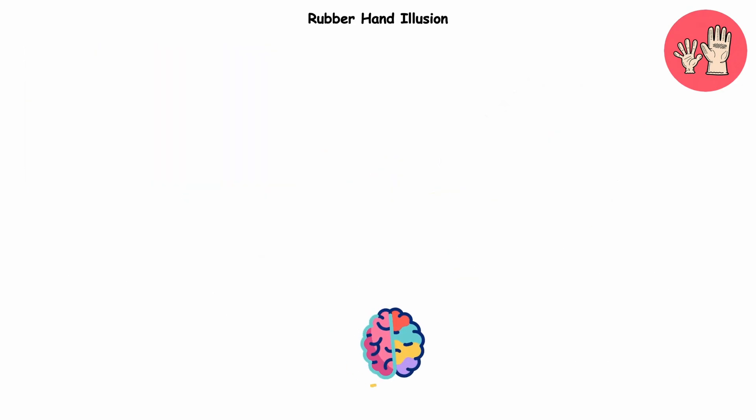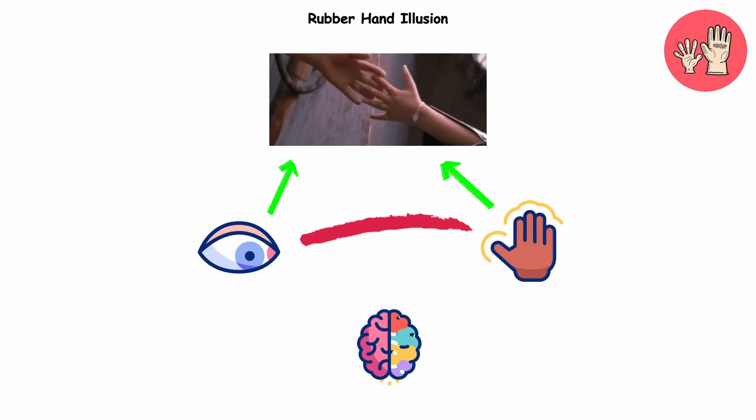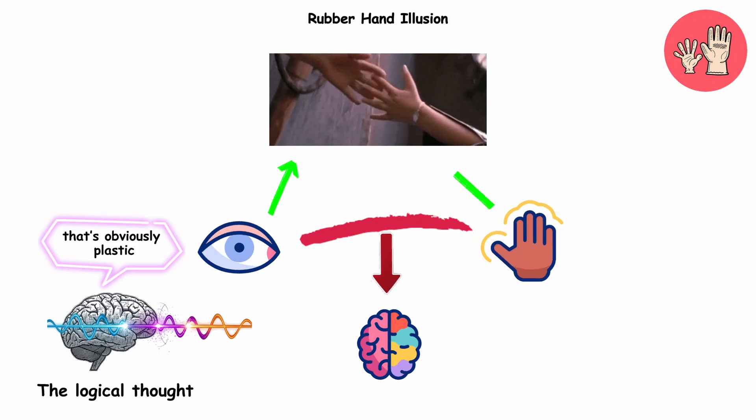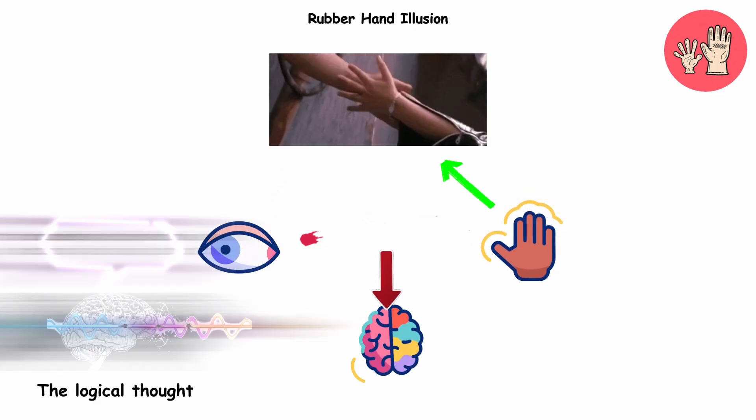This trick works because your brain loves syncing sight and touch. If it sees a hand getting stroked while you feel the exact same sensation, the brain fuses the signals. The logical thought of that's obviously plastic gets bulldozed by the sensory data. Brain says, new hand unlocked.